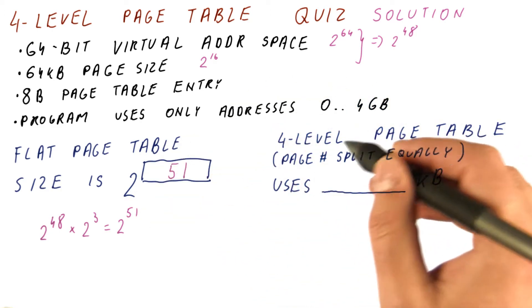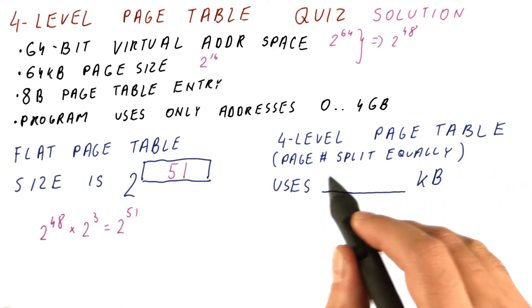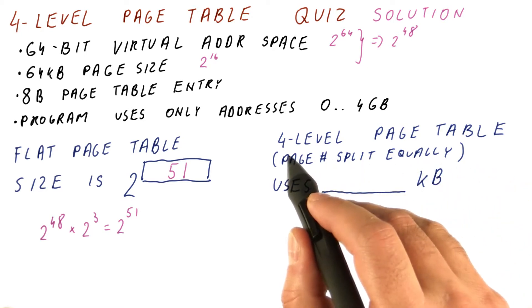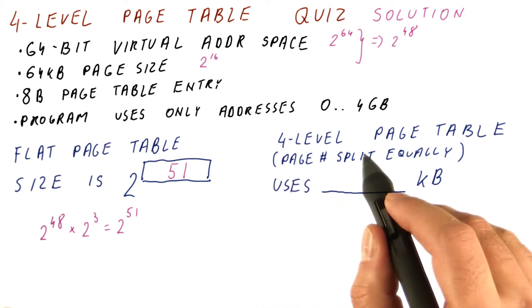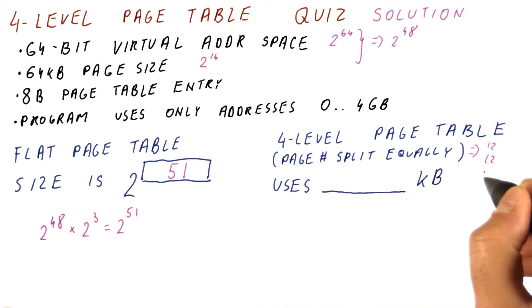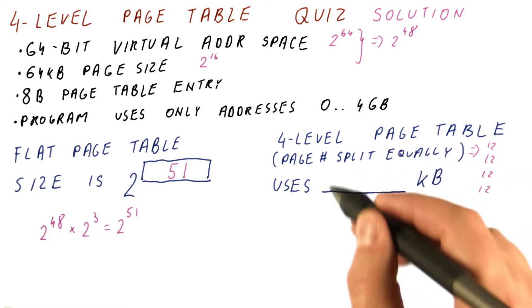Now let's see what the four-level page table looks like. The page number in this page table is split across four levels. So the page number is split into four pieces of 12 bits.